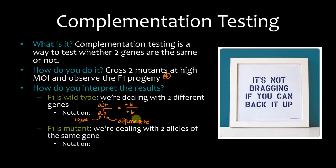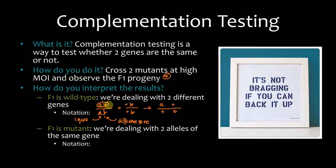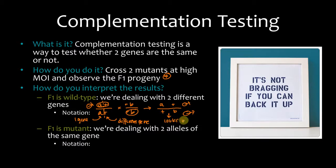If they are two different genes, then you'd write it like this. And the progeny from this cross would be A-plus plus B, right? So we're getting A-plus from mom and B from dad — and this is wild type. So if they're two different genes, this looks wild type.